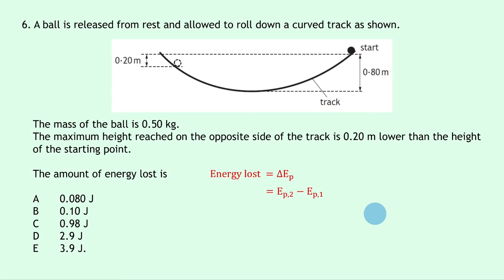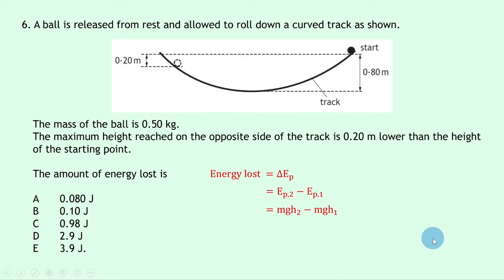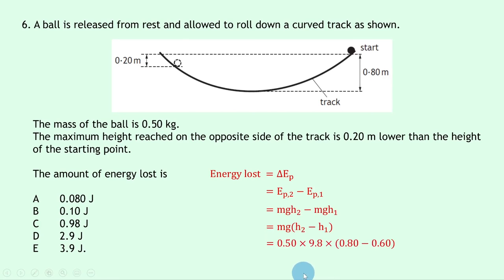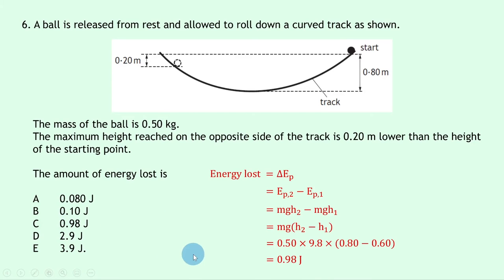Using Ep = mgh, we can write the energy lost as mg(h2 − h1) = 0.5 × 9.8 × (0.8 − 0.6). Note we use 0.6 m, the height above the ground, not 0.2 m which is just the drop from the starting point. This gives 0.98 joules. The answer is C.